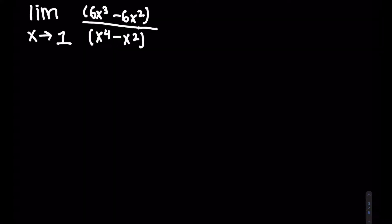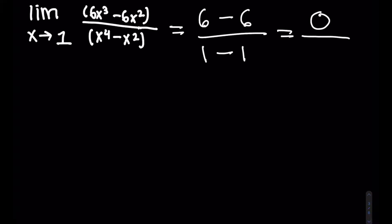Let's try another example — pause the video if you want to do this on your own. The limit as x approaches 1 of 6x cubed minus 6x squared over x to the 4th minus x squared. Plugging in 1: 6 times 1 cubed is 6, and minus 6 times 1 squared is minus 6, so the numerator is 6 minus 6, which is 0. On the bottom, 1 to the 4th minus 1 squared is 1 minus 1, which is 0. So we have 0 over 0 — indeterminate form — and we need to factor.